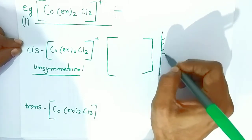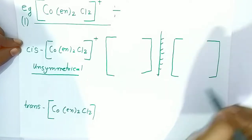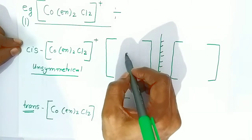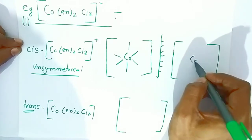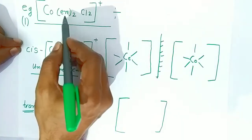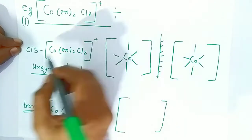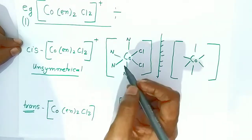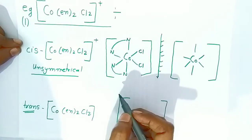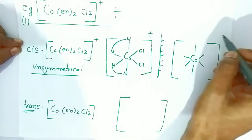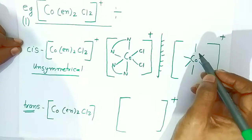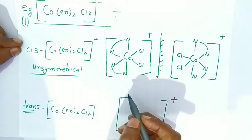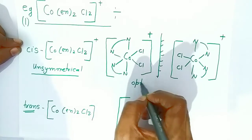Cobalt is at the center in both structures. For the cis isomer, we place the nitrogen atoms of ethylene diamine on one side and the chloride on the other side - this is the cis arrangement, and it is optically active with a charge of +1. The mirror image shows chloride on the opposite side with the ethylene diamine nitrogen atoms rearranged. Both of these cis isomers are optically active.